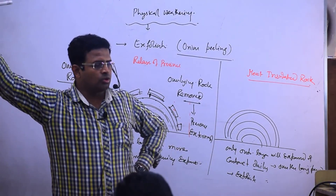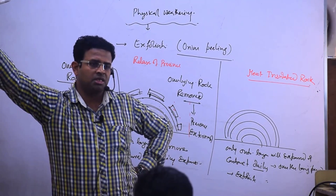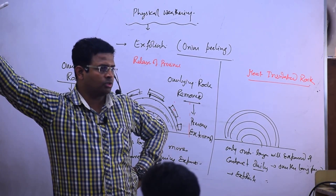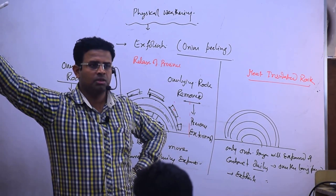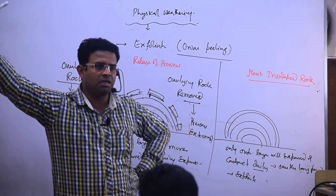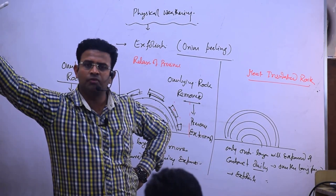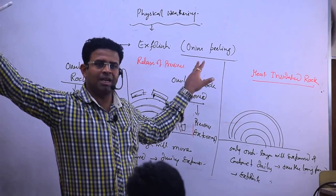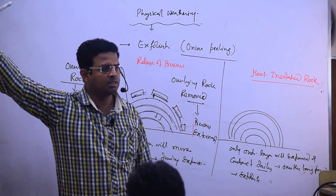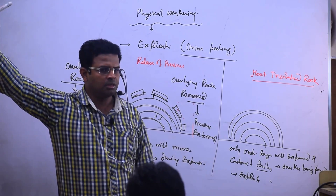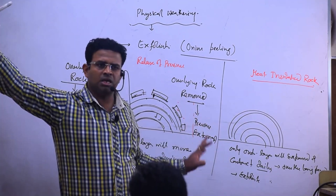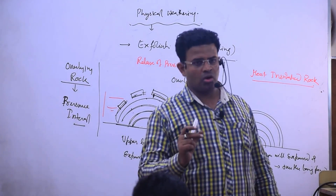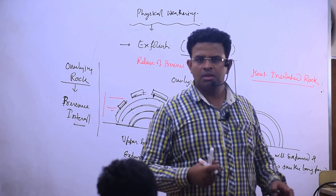This question can appear as: 'What is weathering?' or 'Describe exfoliation.' Define exfoliation as a kind of physical weathering, then describe it. It can be explained through two phenomena: first, release of pressure; second, heat-insulated rock. Then start describing each. Use geographical words like 'expansion' and 'coefficient of expansion' — these words should be there in simple form.